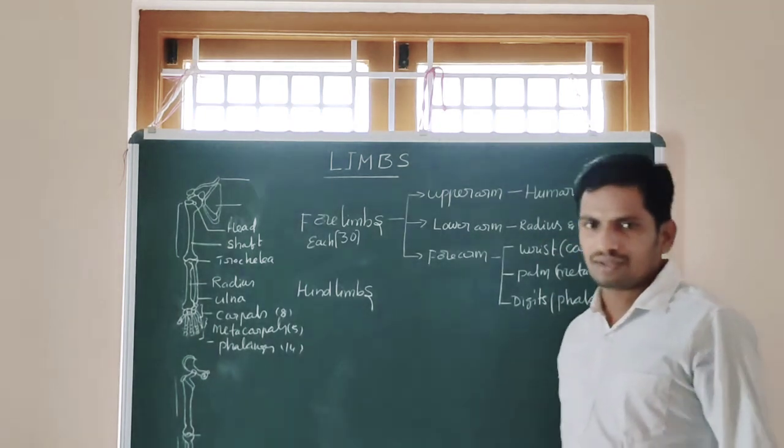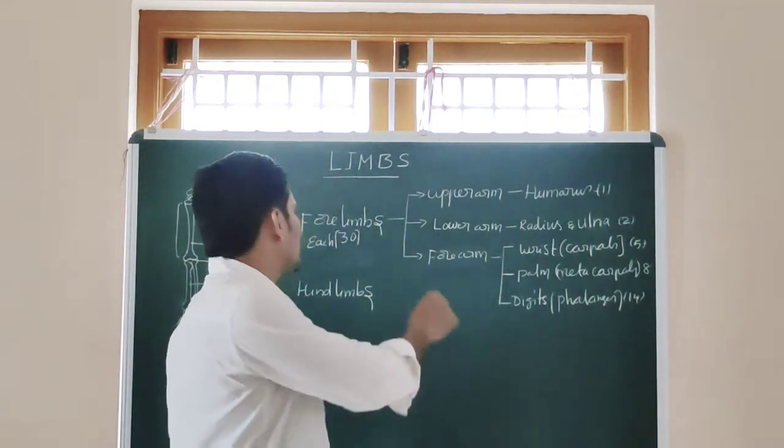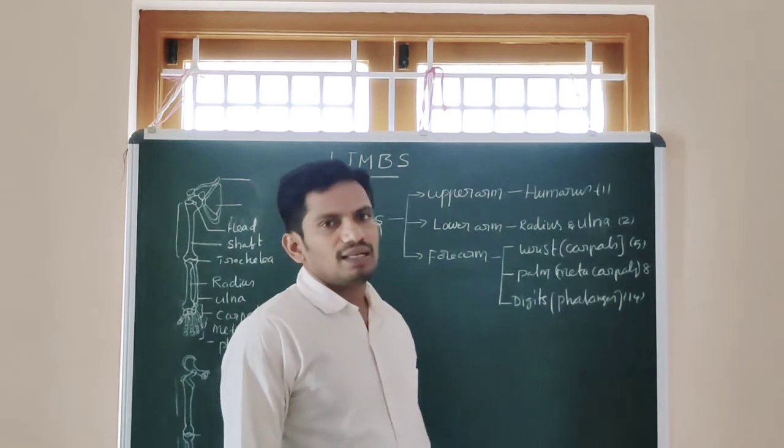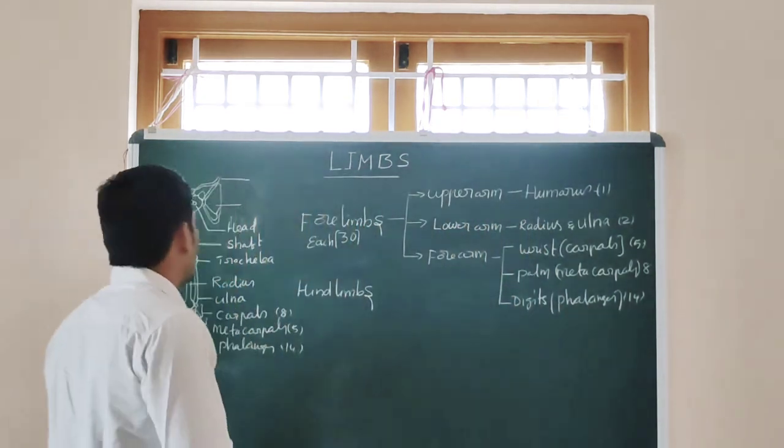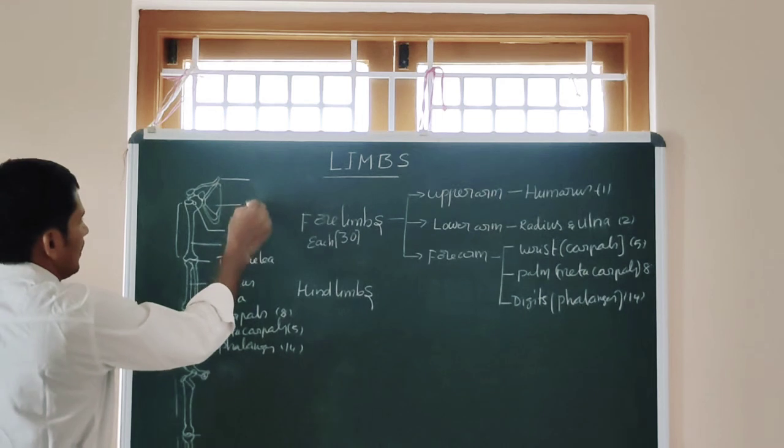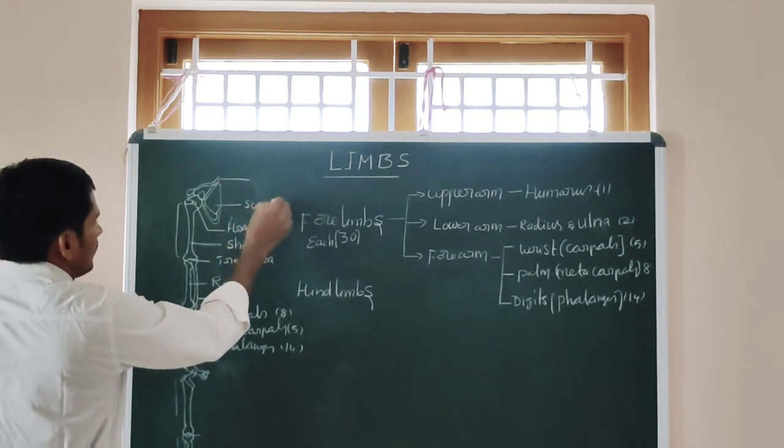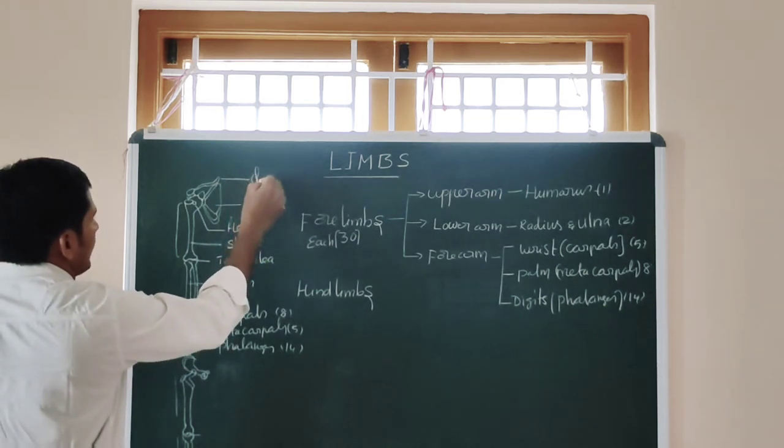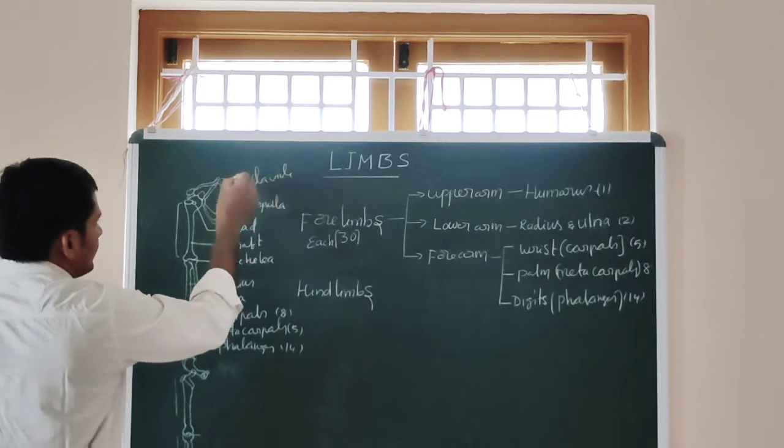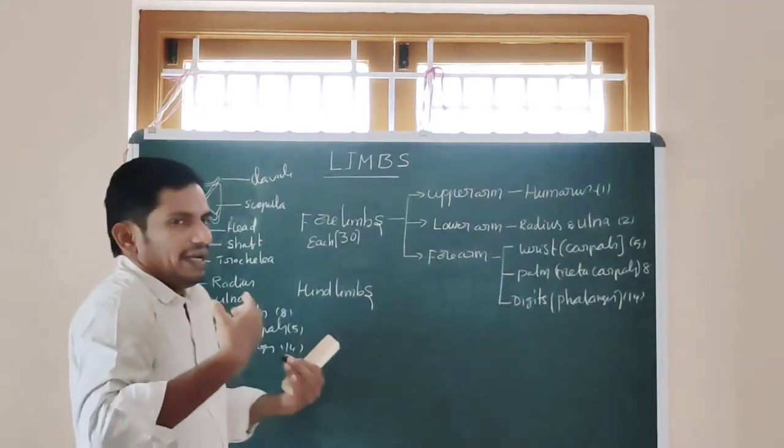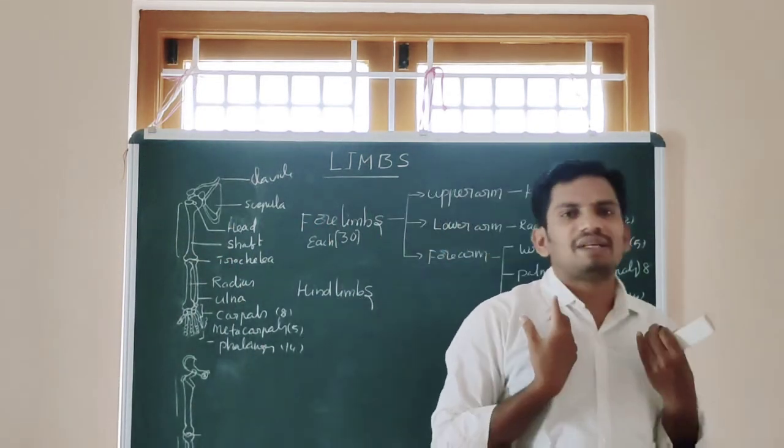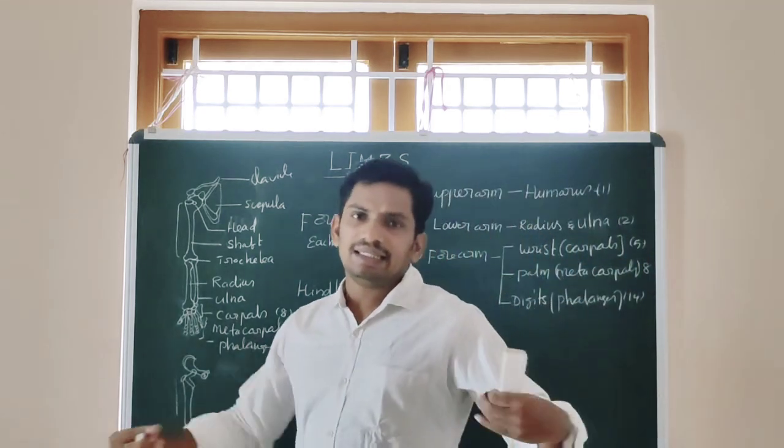These are 14, 5, 8, 2, 1 - total 30 bones. These forelimbs are attached to our pectoral girdle. Here is the scapula and this is the clavicle. These two are major bones for formation of our pectoral girdle. These two limbs are attached to that.